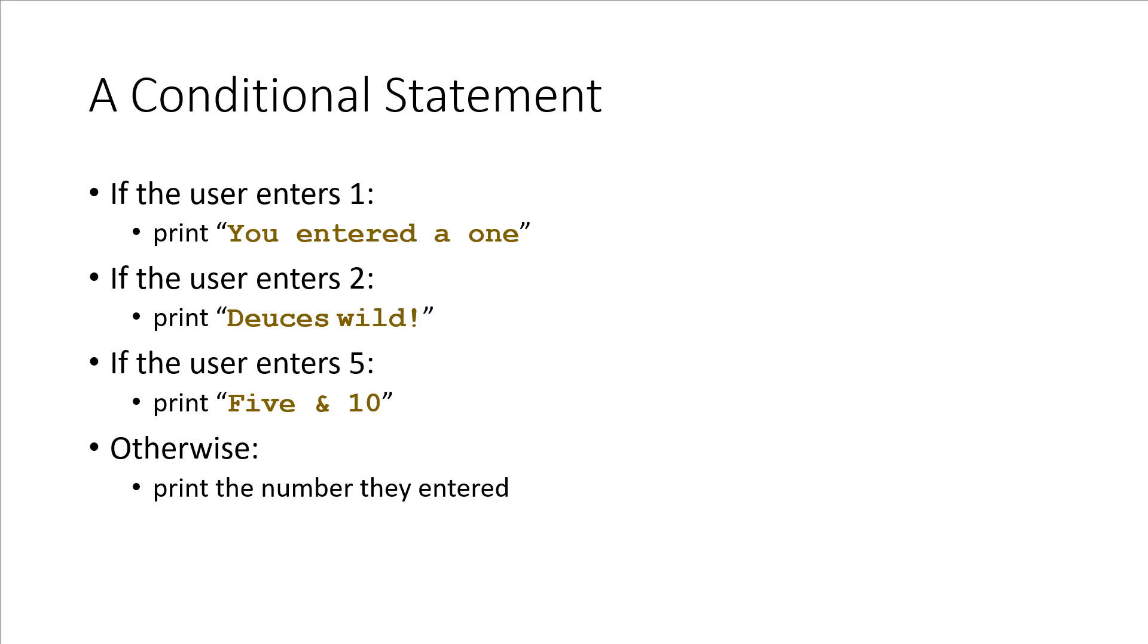A typical thing that comes up when you're writing code is some sort of conditional statement. In this case, suppose the user enters a number, and depending on what number they enter, you're going to print a different thing. If they enter a 1, you print 'You entered a one'. If they enter a 2, you print 'Deuces wild'. If they enter a 5, you print 'Five and 10'. And in all other cases, you print the number that they entered.